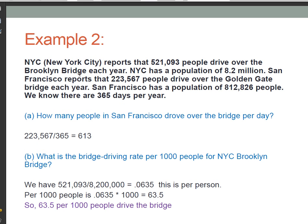Suppose New York City reports that 521,093 people drive over the Brooklyn Bridge each year. New York City has a population of 8.2 million. San Francisco reports that 223,567 people drive over the Golden Gate Bridge each year. San Francisco has a population of 812,826 people. We also know, of course, that there are 365 days in each year.